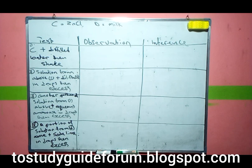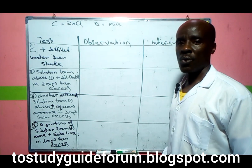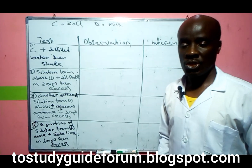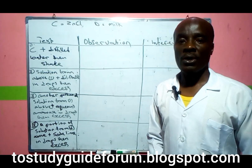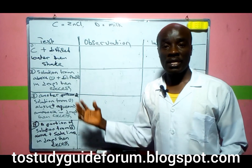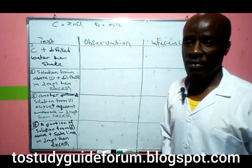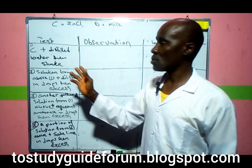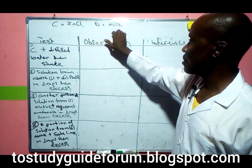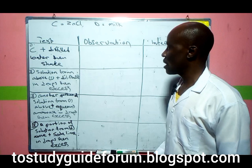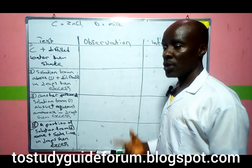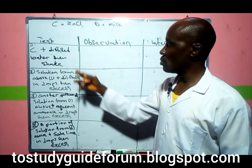Welcome to Study Guys Forum. Today we'll be looking at nickel qualitative analysis chemistry 2024, covering the possible questions you are likely to be tested on in this exam. The salt given to us is C, which is zinc chloride, and D is milk. We're looking at the possible questions you are likely to encounter.